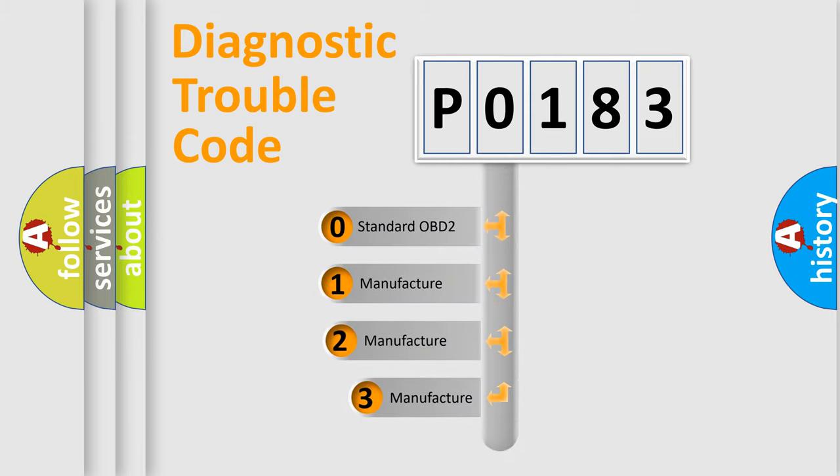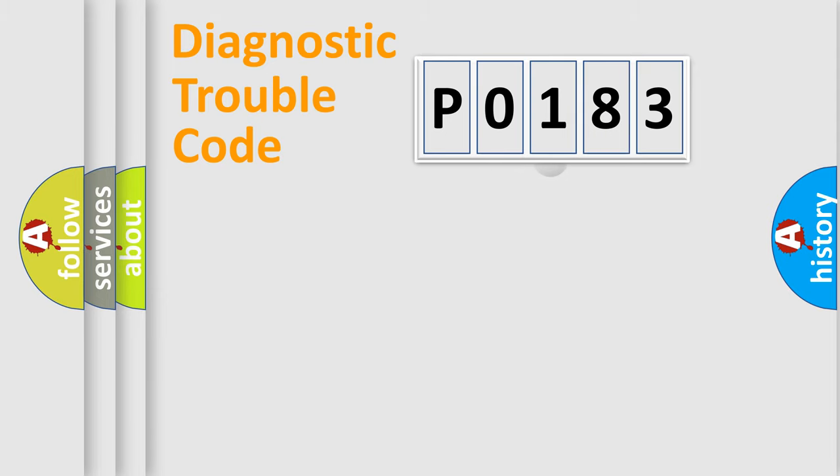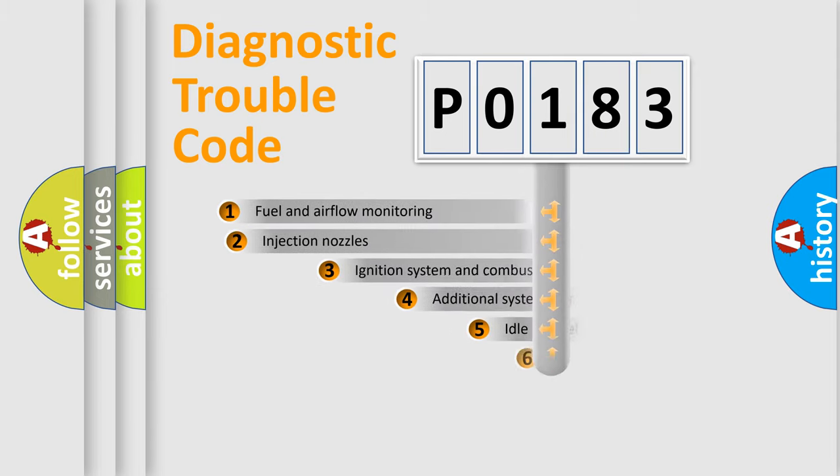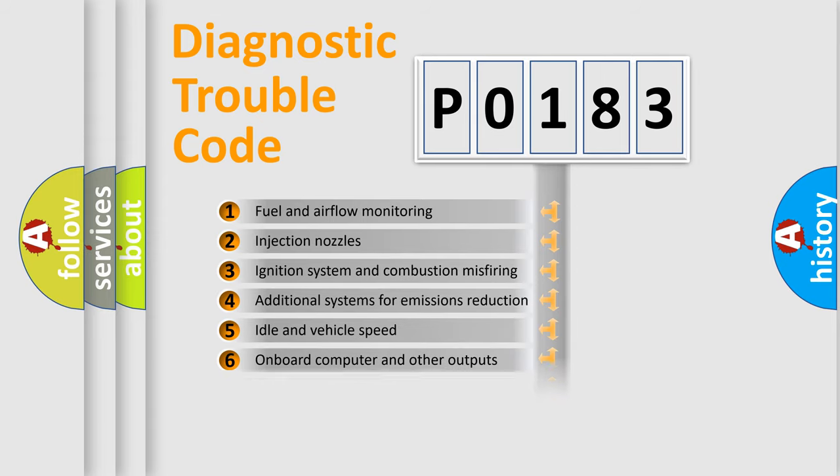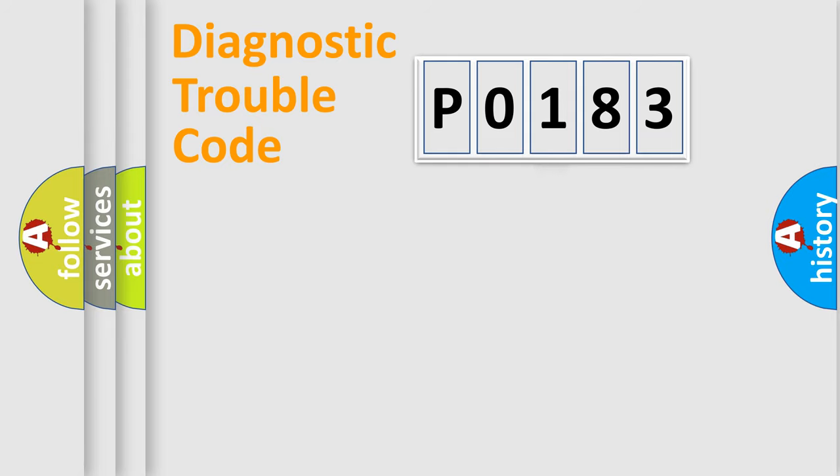If the second character is expressed as zero, it is a standardized error. In the case of numbers one, two, or three, it is a manufacturer-specific expression of the car error. The third character specifies a subset of errors. The distribution shown is valid only for the standardized DTC code.